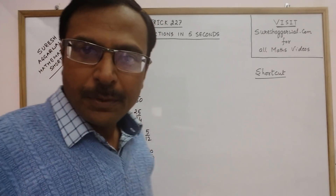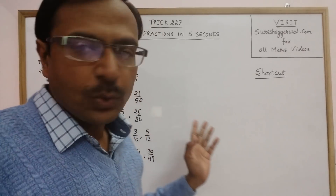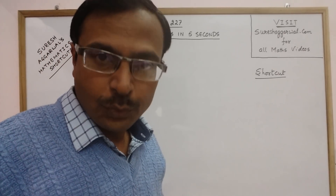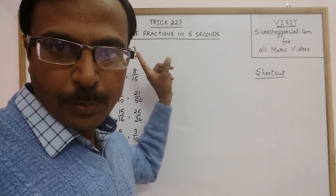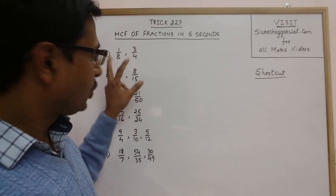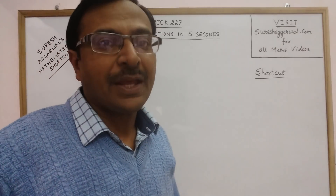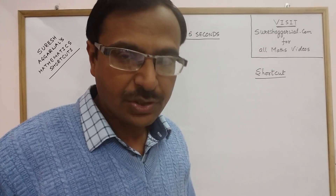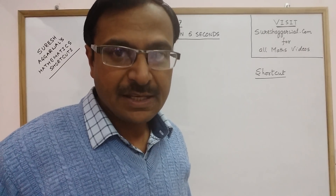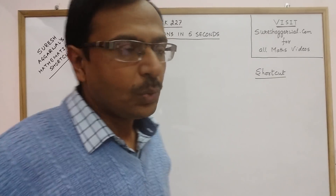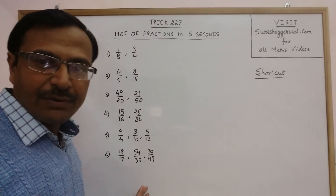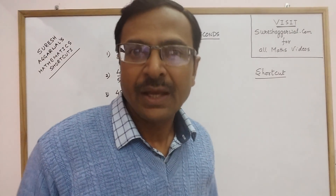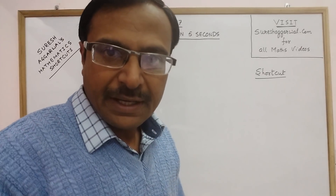Hello dear friends! In trick number 227, today I am going to tell you an amazing shortcut through which you will be able to find the Highest Common Factor, that is HCF, of two or more fractions in a matter of just five seconds. If you have seen my earlier videos on finding HCF of numbers through a shortcut, and also trick number 50 which showed a method to find the LCM of numbers mentally, then you can find out the HCF of all these fractions orally as well.